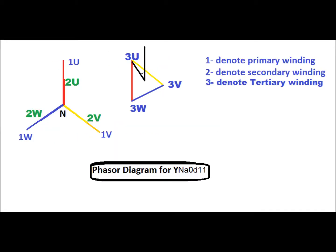The vector diagram for YNA0D11 is shown in this diagram. Here 1 denotes primary winding, 2 denotes secondary winding or LV winding, and 3 denotes tertiary or TV winding. 1U, 1V, and 1W denote red, yellow, and blue phase of the primary winding. 3U, 3V, and 3W denote red, yellow, and blue phase of the tertiary winding. Primary and secondary windings are in phase, while tertiary winding leads by 30 degrees with the primary winding.